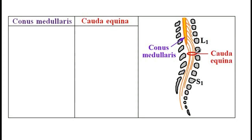In this video, I would like to go over the clinical features of conus medullaris and cauda equina syndrome. As you can see, the spinal cord will end at around L1 and L2 levels. The ending of the spinal cord is referred to as conus medullaris.